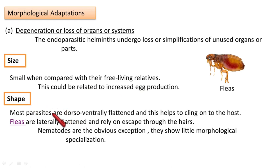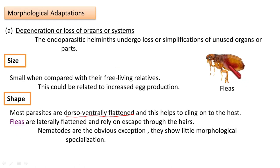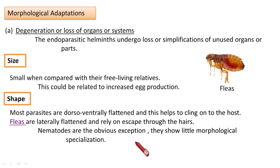Regarding shape, most endoparasites are dorso-ventrally flattened, which allows them to cling and strongly attach onto the host. In the case of fleas — flightless parasites dwelling on the body of mammals and birds — their body is not dorso-ventrally flattened but instead laterally flattened, which allows them to easily escape through the hair of these mammals and birds. Nematodes do not have such morphological specializations.